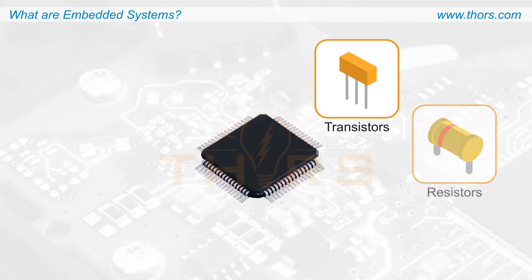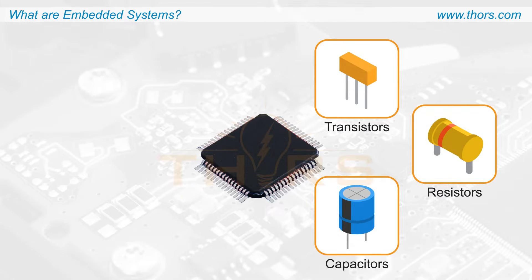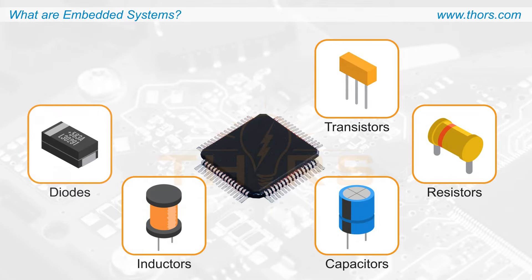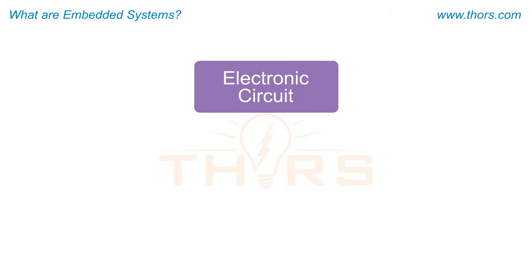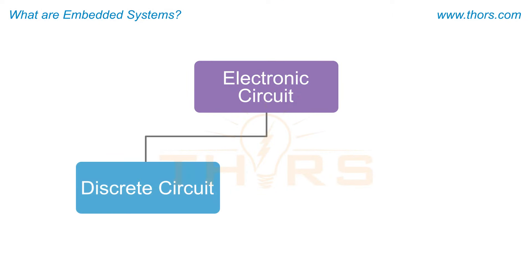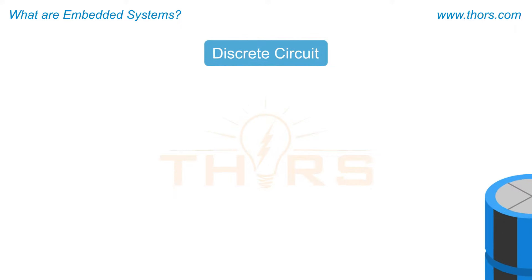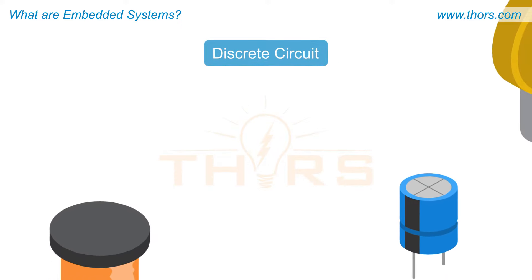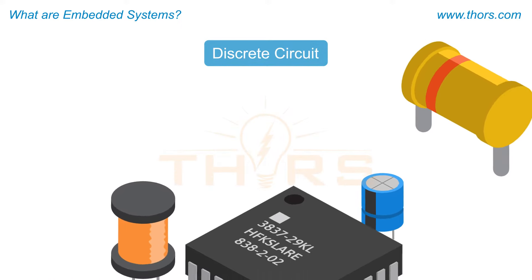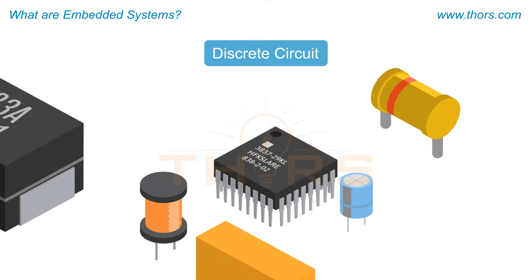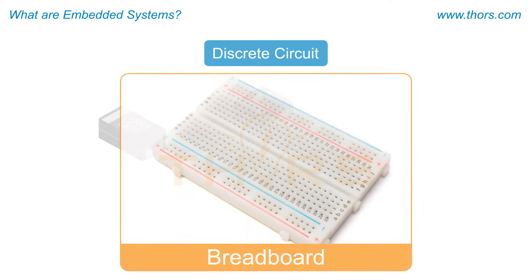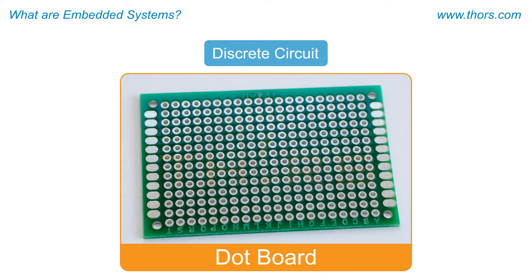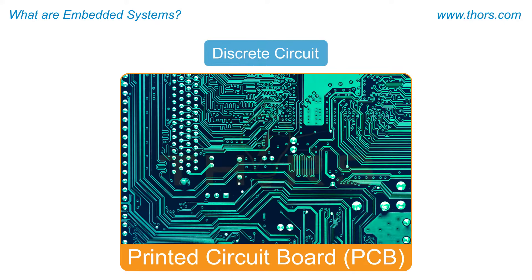Electronic components such as transistors, resistors, capacitors, inductors, diodes, and thyristors are designed in a specific manner to execute a given function. An electronic circuit may be either a discrete circuit or an integrated circuit. A discrete circuit consists of individual electronic components assembled on a circuit board such as a breadboard, a dot board, or a printed circuit board (PCB).